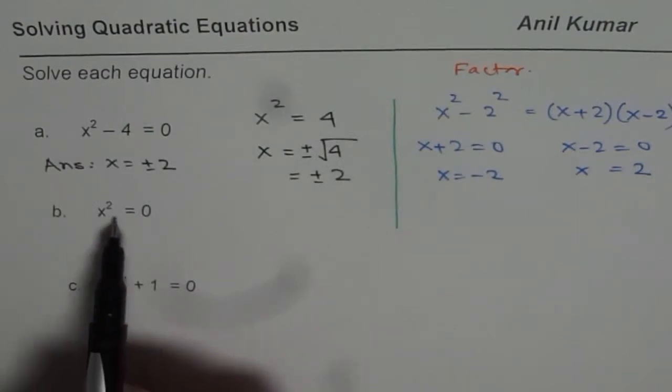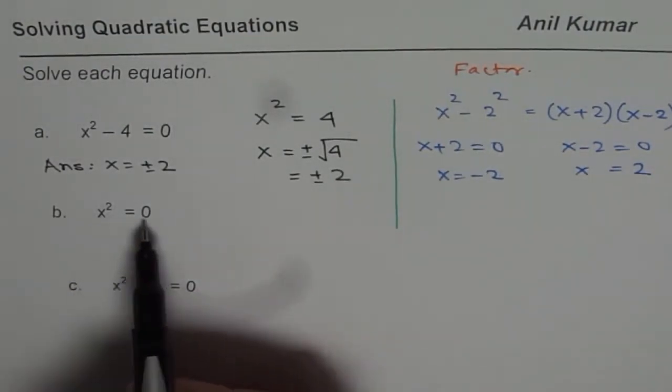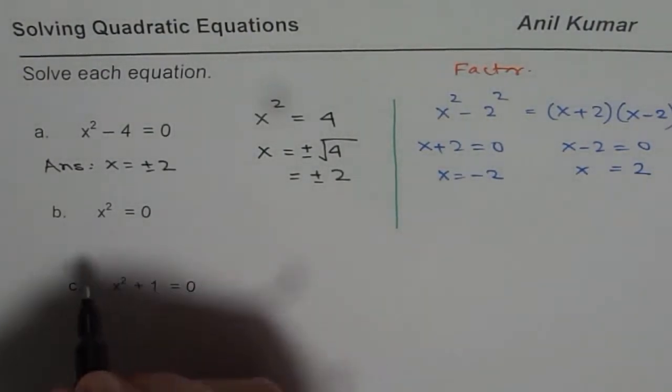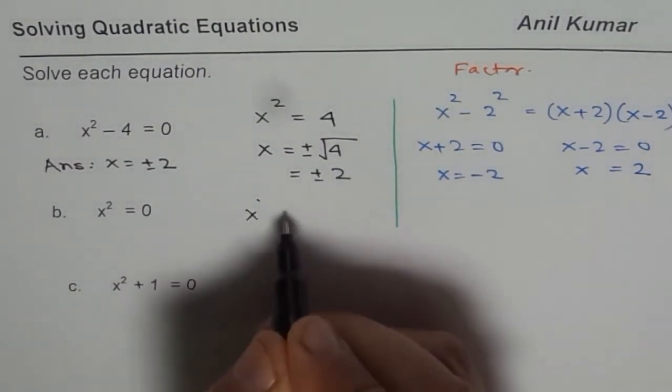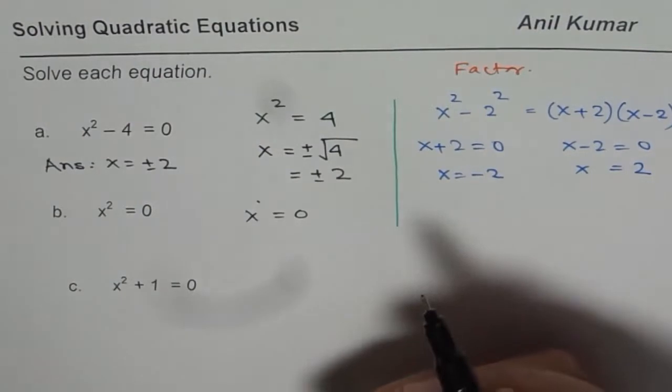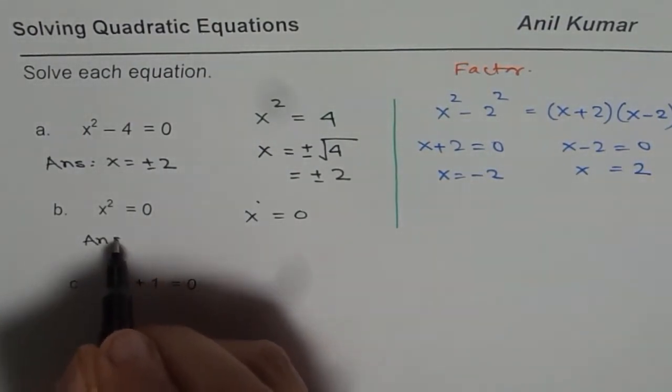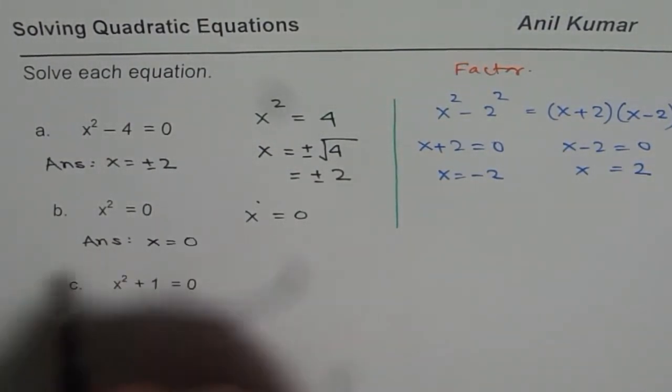Next question is x square equals to 0. Here x could be 0. So if I equate this to 0, x square equals to 0 means x equals to 0. So here we have only one solution and that is x equals to 0.